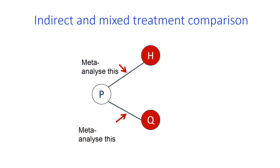If two treatments, haloperidol and quetiapine, have both been compared with a common comparator — here placebo — in two different sets of trials, placebo versus haloperidol and placebo versus quetiapine, then the relative efficacy between haloperidol and quetiapine can be estimated indirectly via placebo. We basically perform a meta-analysis for each direct comparison versus placebo, and then we subtract the two estimates to get the indirect treatment effect.